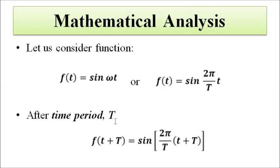Let us take the sine function first. We represent it as f(t) = sin(ωt), where ω is the angular frequency. Omega equals 2πf, and f equals 1 divided by the time period T. So we can write the function as f(t) = sin(2π/T · t).